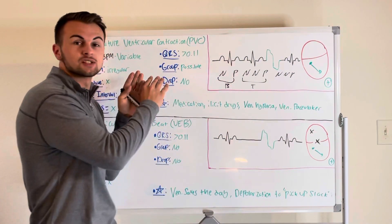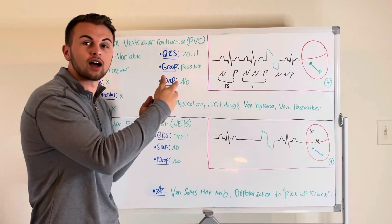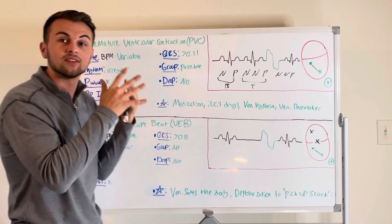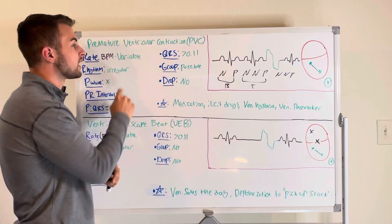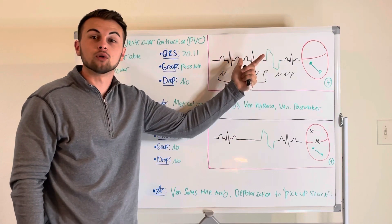So the rate of this PVC is really dependent on the underlying rhythm that's already there. And the rhythm is irregular or unpredictable, meaning we don't know when they will occur.